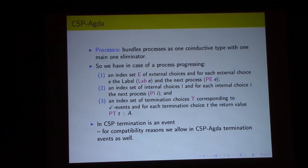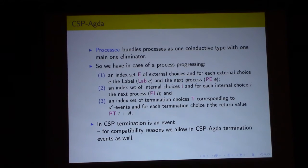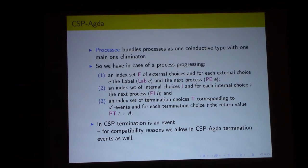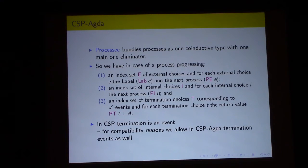ProcessInfinity bundles the process as one coinductive type with one main eliminator. When the process is progressing, there are three cases: an index set E of external choices, where for each external choice the label and next process PE are performed; an index set I of internal choices, where for each internal choice I the next process is PE-I; and an index set T of termination choices corresponding to tick events, where for each termination choice T, value PT is returned. In CSP, termination is considered an event, not just a property of the process, and for compatibility we allow this termination event in CSP-Agda.